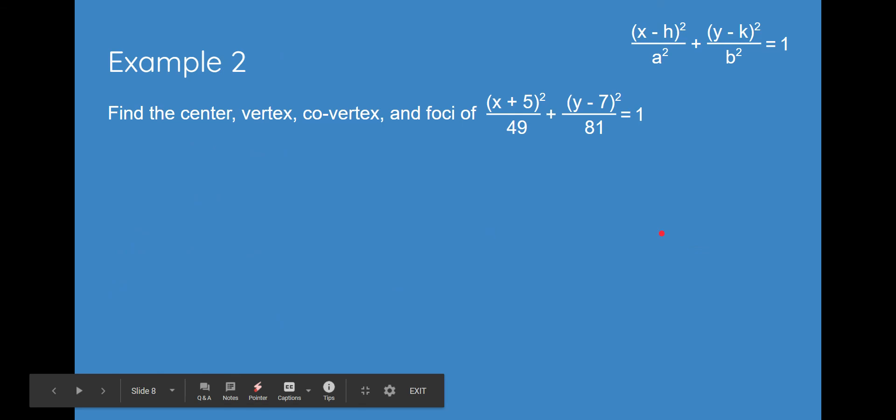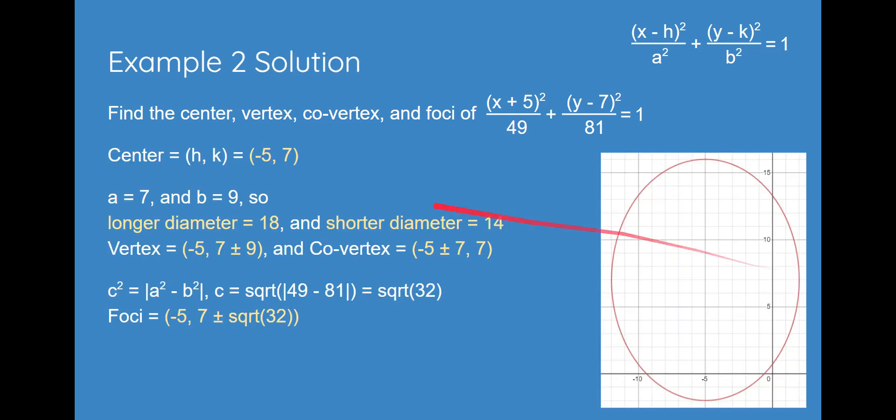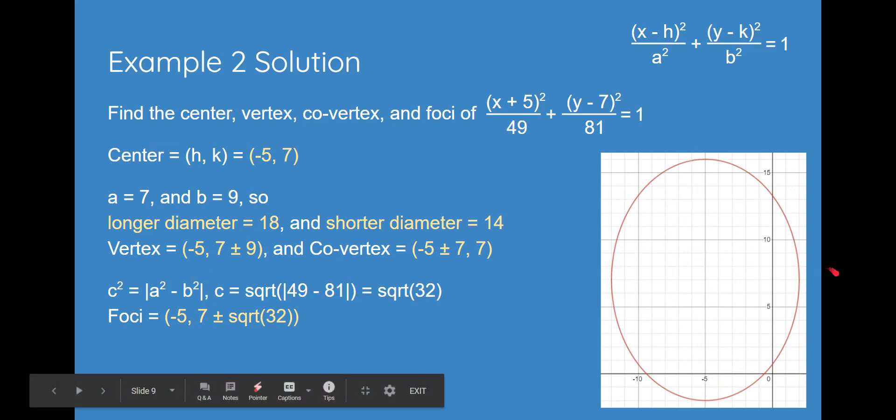Example 2, feel free to pause the video. This is pretty straightforward, same as the last question. We find center h, k, and then we can find a and b from this equation. And, this time, as you can see, it's longer up and down. So, now you can get your vertex and your co-vertex. And, you can find foci by plugging in a and b.